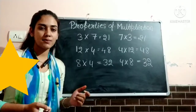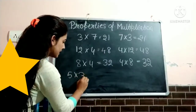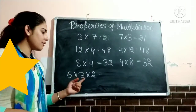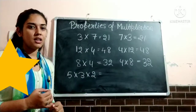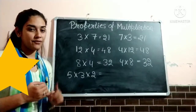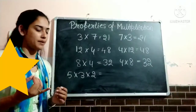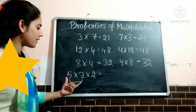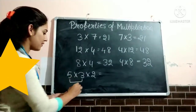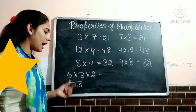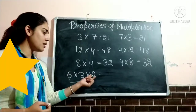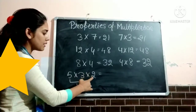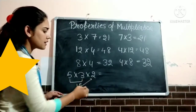Let us move to the next property. 5 multiply 3, multiply 2. Now we have three numbers. 5 threes are 15, 15 twos are 30. First of all, if three numbers come in multiplication, we will multiply the first two numbers: 5 threes are 15. After that, we will multiply the next number by the obtained product — 15 twos are 30.